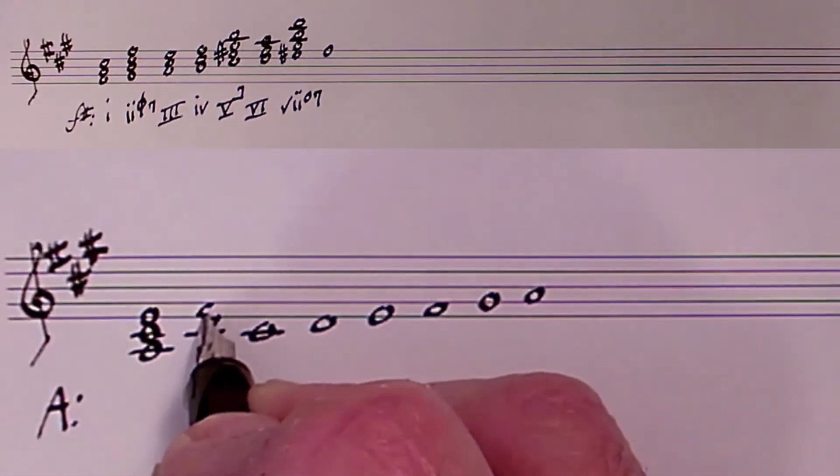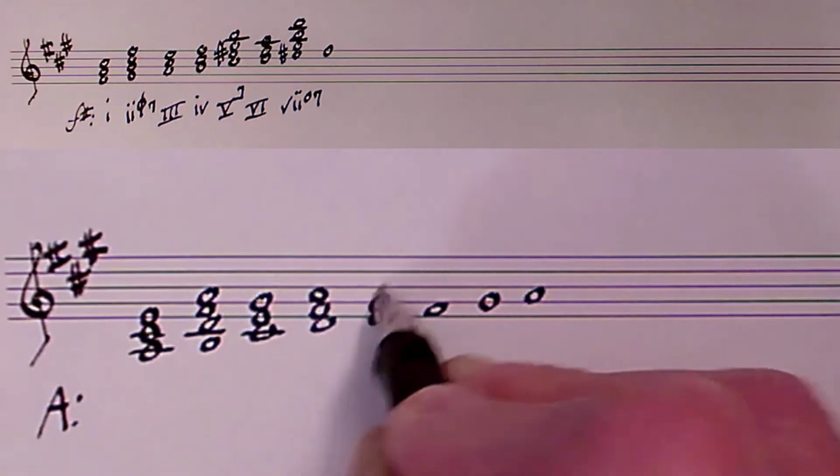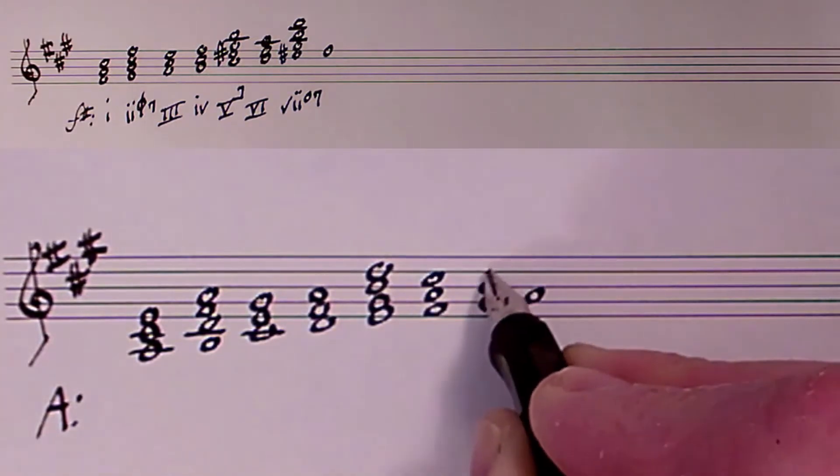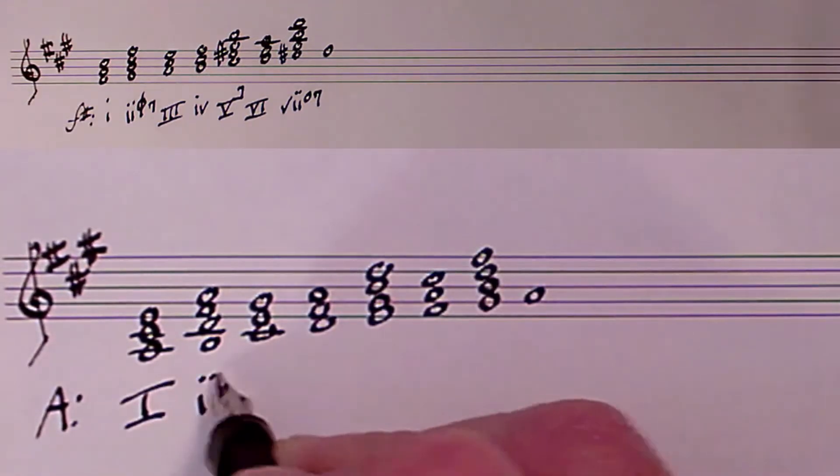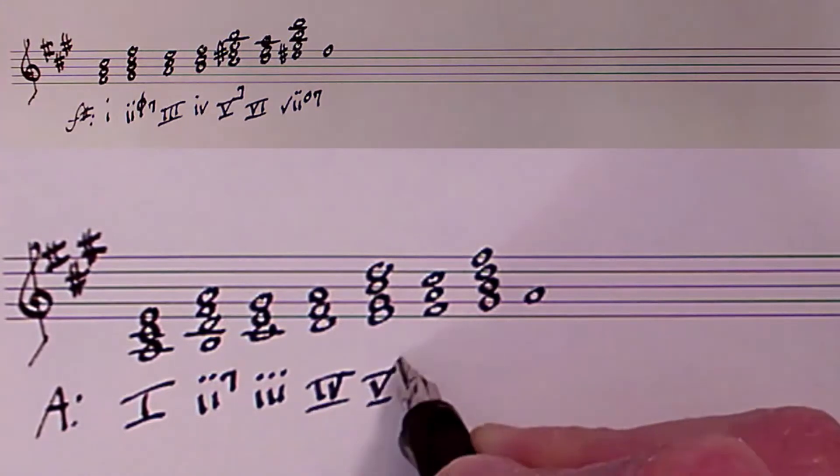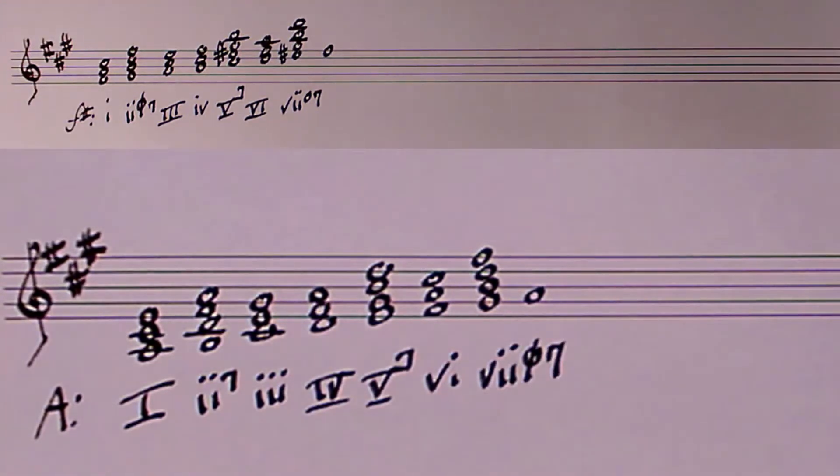And let's also build a chart in the key of A, because we'll need that too. Again, we'll build some of those chords up to the seventh. So we've got the one, the two seven, the three, the four, the five seven, the six, and the seven, which is half-diminished seven.